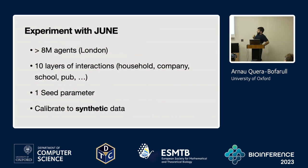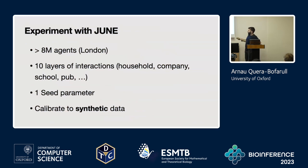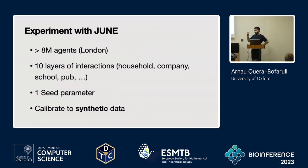My calibration experiment uses JUNE with 8.2 million agents — approximately London. There are 10 parameters controlling contact intensity at each location: households, companies, schools, pubs, grocery shops, cinemas, gyms, plus one parameter controlling seeding. Rather than using real observed data, I generate synthetic data with chosen parameter values and try to recover them — a simple exercise to verify the pipeline.